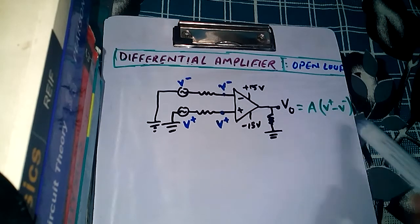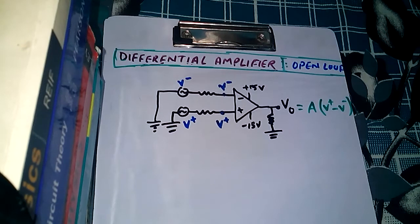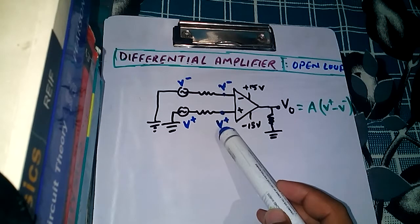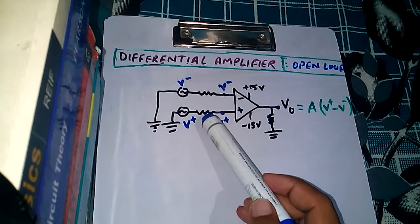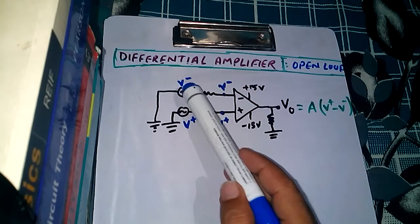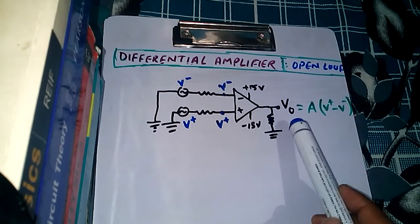Now we have to derive the output formula. To derive it, we use a principle named the Principle of Superposition. To work it out, we go through three steps. The first step is to assume that the positive terminal is grounded — that means we eliminate the voltage available to the positive terminal — but the voltage to the negative terminal will remain as it was.